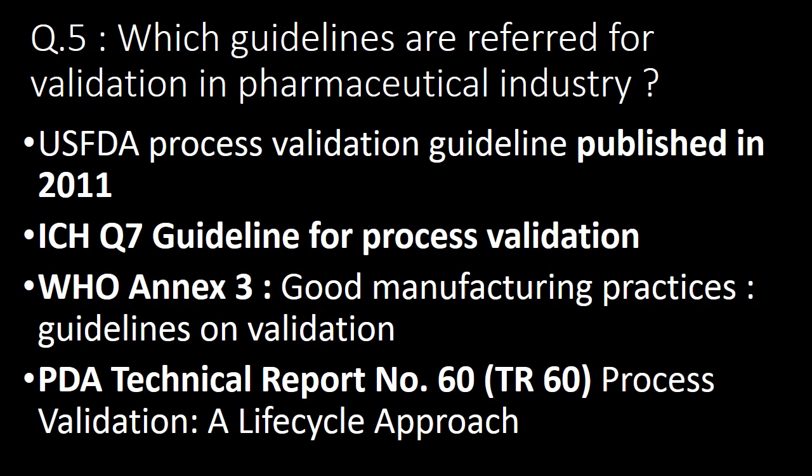Fifth question: which guidelines are referred to for validation in the pharmaceutical industry? The four majorly referred guidelines are: first, the USFDA process validation guideline published in 2011; second, ICH Q7 guideline for process validation; third, WHO Annex 3 good manufacturing practices guidelines on validation; and fourth, PDA technical report number 60, which is process validation — a life cycle approach.